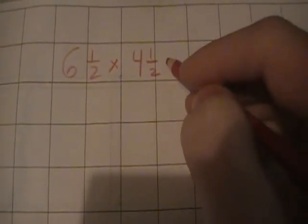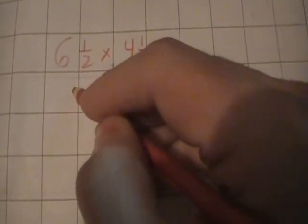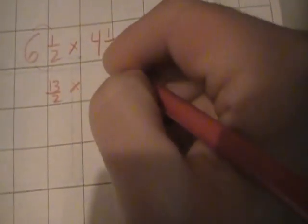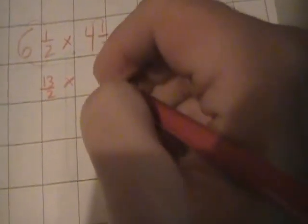When you get an expression like this, let's say six and a half times four and a half. Well you can certainly rename these as improper fractions and multiply across and find your product. In this case, six times two plus one is thirteen. So we have thirteen halves times four times two plus one, nine halves.